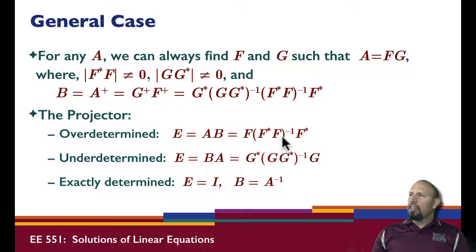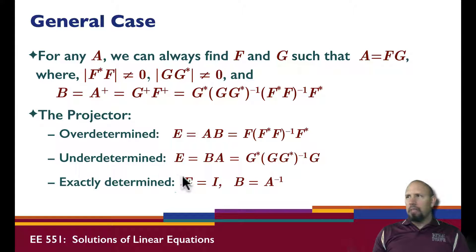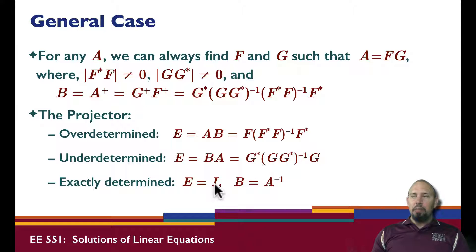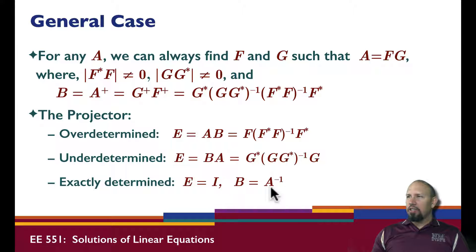In the over-determined case the projector is only a function of F, and in the under-determined case it's only a function of G. In the exactly-determined case — when A is square and non-singular — the projector is the identity matrix and B is simply the inverse of A. This is the special case; usually you'll encounter one of the two non-square cases.